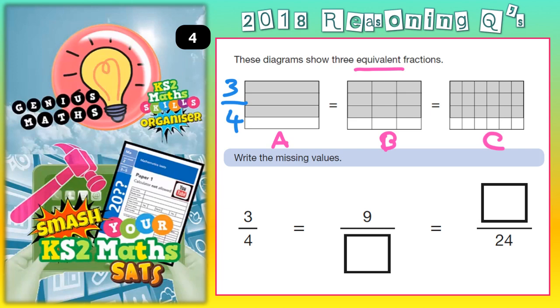In diagram B we've actually got 12 parts all together. 1, 2, 3, 4, 5, 6, 7, 8, 9, 10, 11, 12. And if you count up the amount that are shaded you'll see that 9 of those parts are shaded. So that is 9 out of 12 which is basically what is going to go in this missing box here. We've already got the 9 so we need to put the 12.